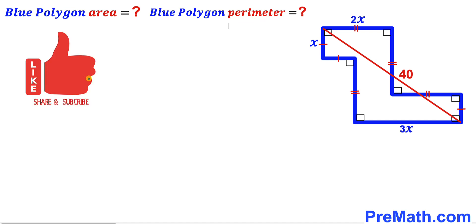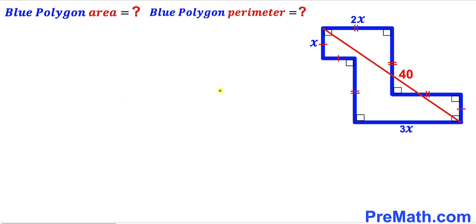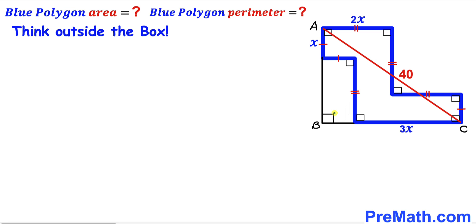Please don't forget to give a thumbs up and subscribe, and keep in mind that this figure may not be 100% true to scale. Let's get started — we're going to think outside the box. I have constructed horizontal and vertical sides, and as a result we end up with right triangle ABC.